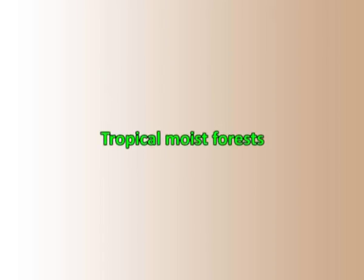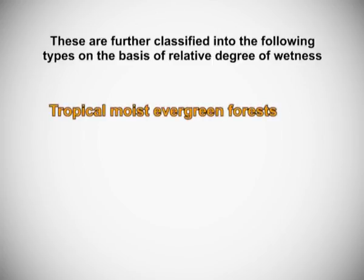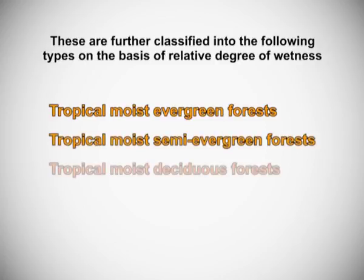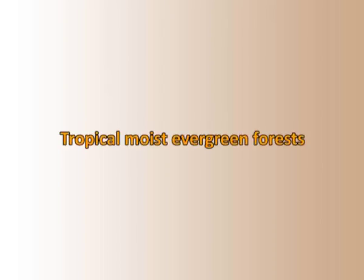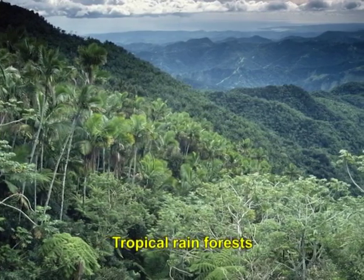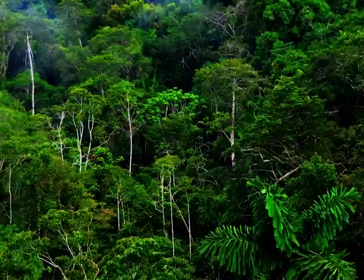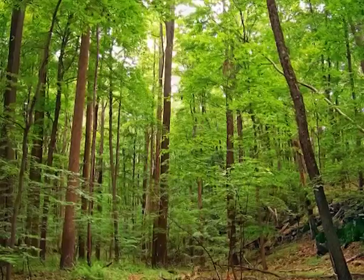Tropical moist forests are further classified into the following types on the basis of relative degree of wetness: tropical moist evergreen forests, tropical moist semi-evergreen forests, and tropical moist deciduous forests. Tropical moist evergreen forests are also called tropical rainforests. In India, such forests are found in very wet regions receiving more than 250 cm average annual rainfall.